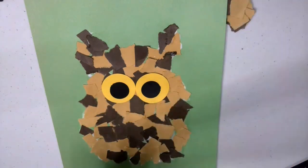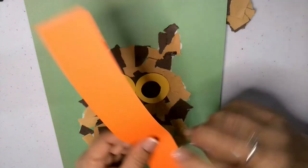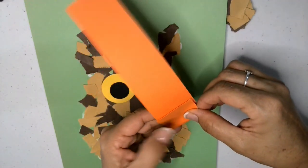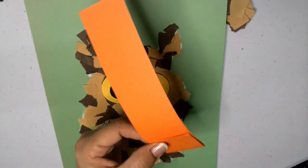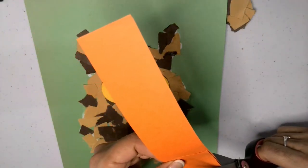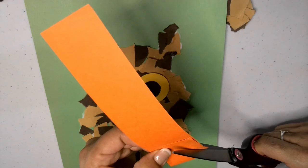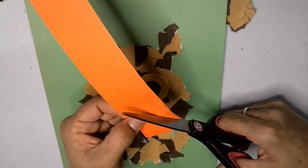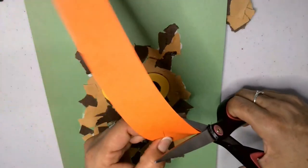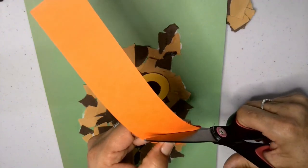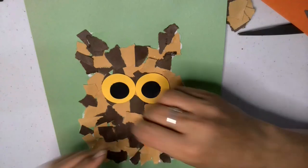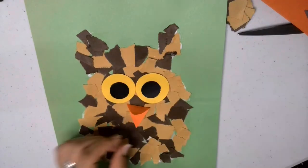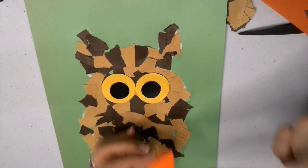And with the strip of orange paper, we're going to fold a little bit about an inch or so. And cut a triangle out of it. I'm right-handed, so I do one side and then I flip it and I do the other side. And it becomes a beak that opens when you glue it like that. So it gives it a nice touch.